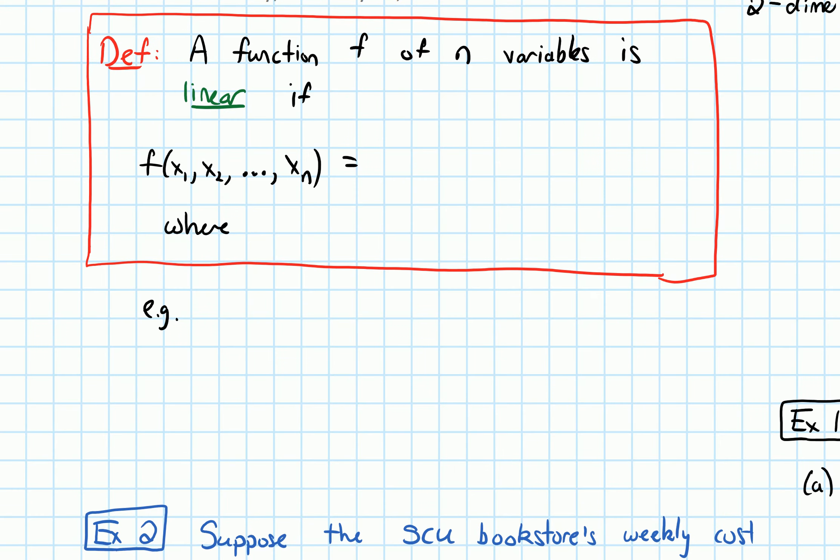Alrighty, so let's give the definition. A function f of n variables is linear if... So I'm writing f, and then inside of it I have n variables, which I'm calling x₁, and then x₂. And then I put a comma, dot, dot, dot, comma, and then the last variable I'm calling x sub n. So it's linear if it has the form a₀ plus a₁x₁, there's that first variable x₁, plus a₂x₂, there's that second variable x₂, and then plus dot, dot, dot, plus aₙxₙ, and that is the nth variable x sub n.